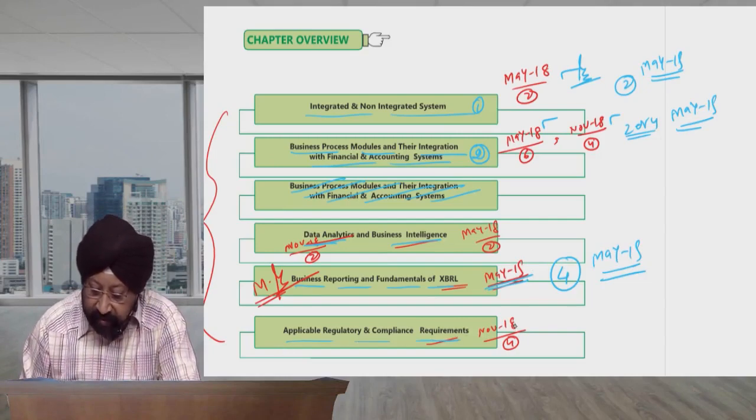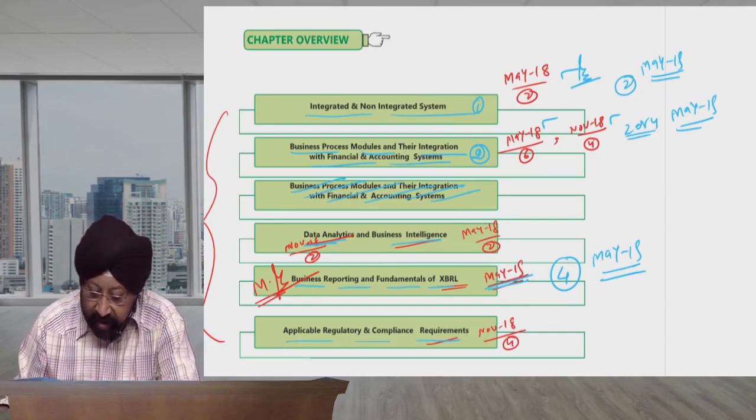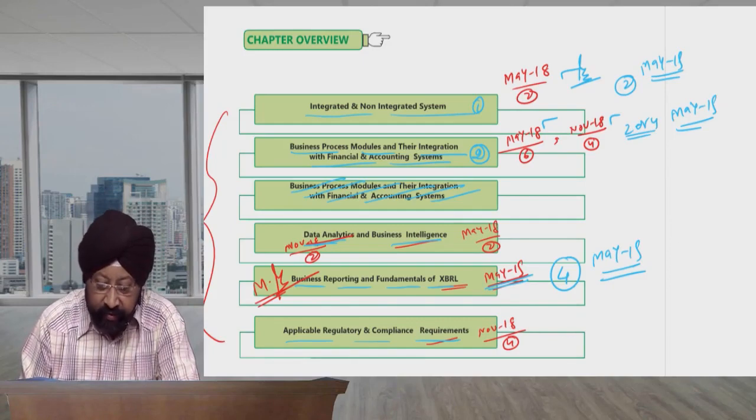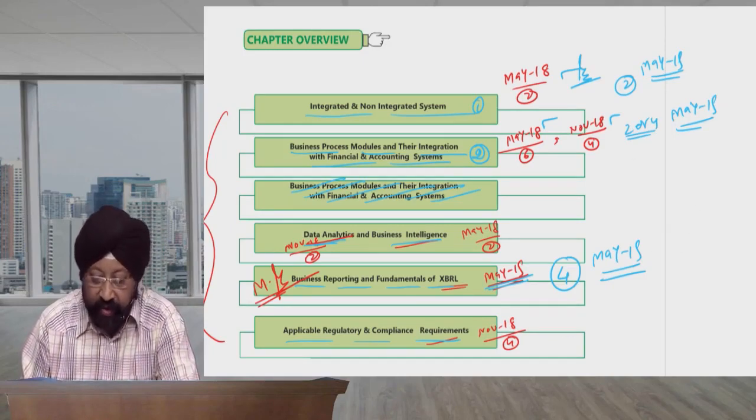After that, the question on applicable regulatory and compliance requirements. November 18, four marks came on this question. So which is important? Integrated, non-integrated system, business process module, and XBRL are important.